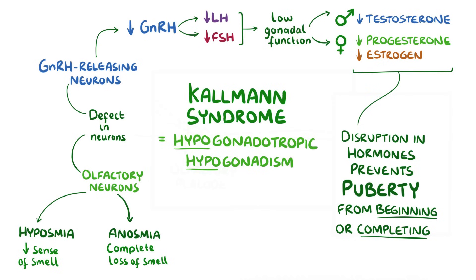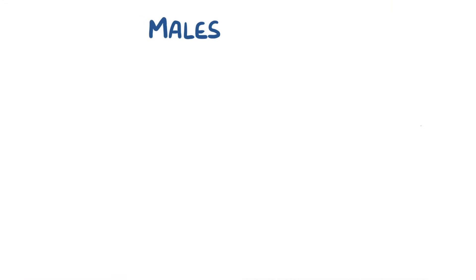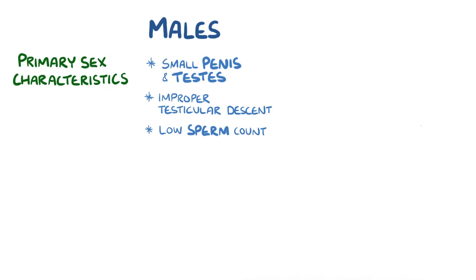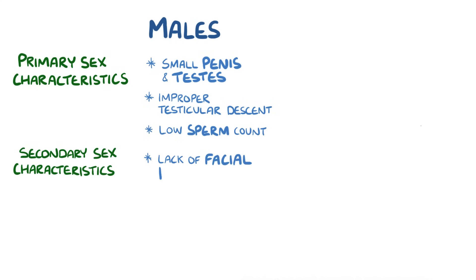In Kallmann syndrome, there's an underdevelopment of primary and secondary sex characteristics. In males, primary sex characteristic dysfunction includes having a small penis and testes, improper testicular descent, and a low sperm count. Secondary sex characteristic dysfunction includes a lack of facial hair, low muscle mass, and not developing a deep voice.